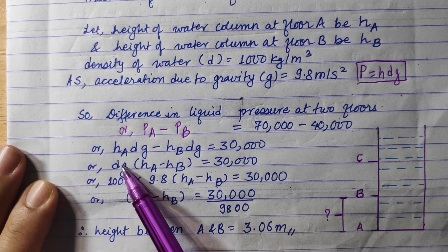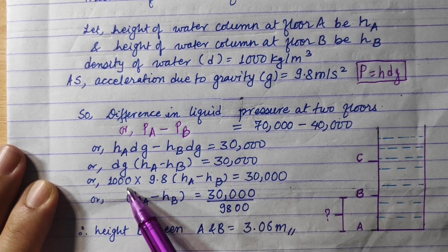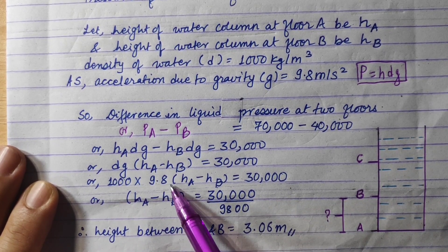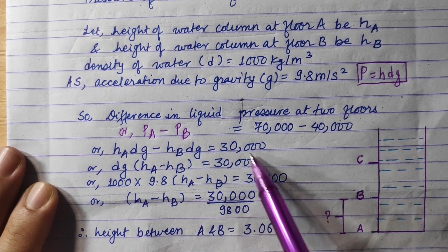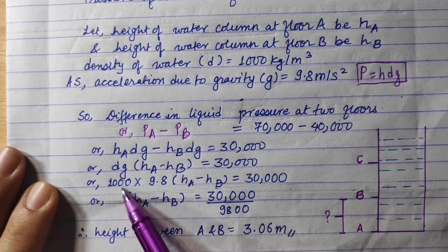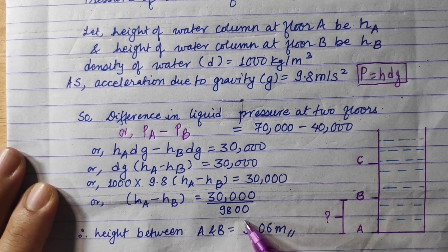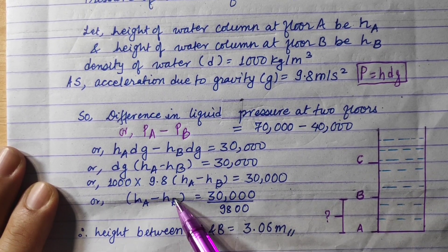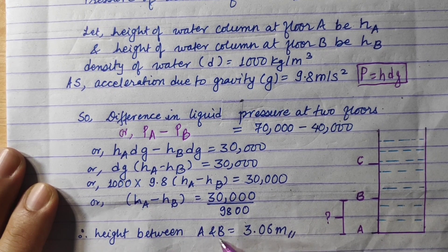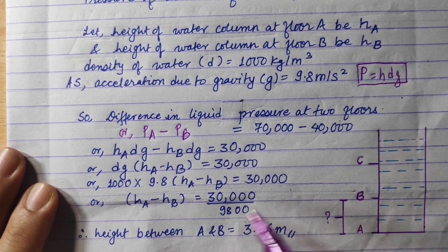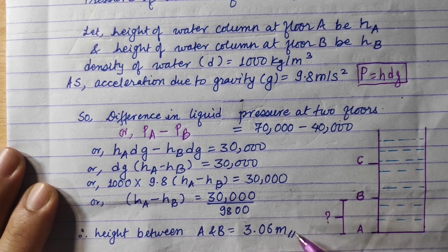Density of water is 1000 as given, g is 9.8. So 1000 times 9.8 equals 9800. Dividing 30,000 by 9800, we get hA minus hB, which is the height between two floors A and B, equals 3.06 meter.